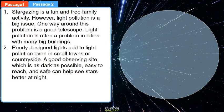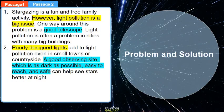The other passage is about stargazing. Let's find out its text structure. It is using problem and solution. The sentences highlighted in yellow show problems. The sentences highlighted in blue show solutions. However, light pollution is a big issue. Now issue is our keyword. A good telescope is a solution to that problem. Poorly designed lights is a problem. And a good observing site, which is dark, accessible, and safe, is a solution.